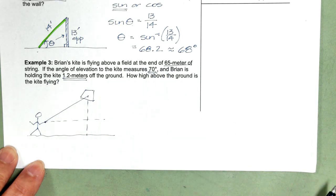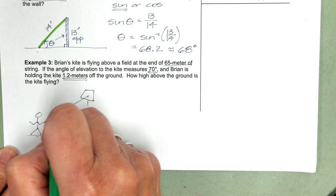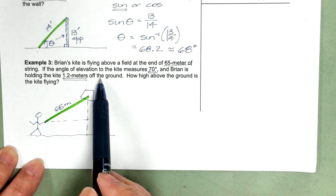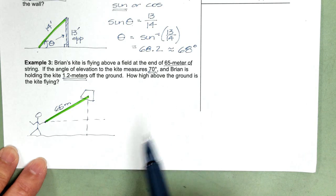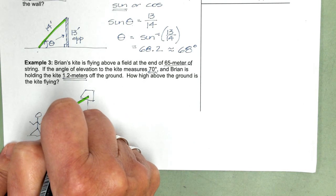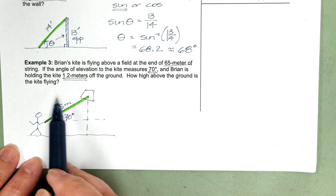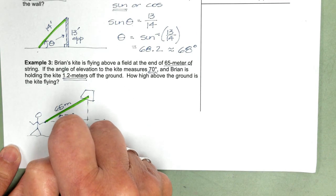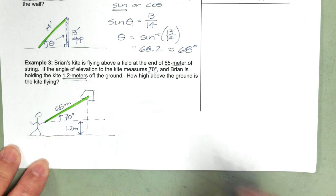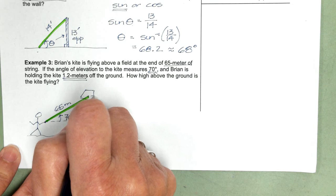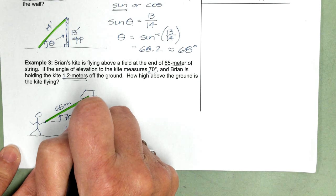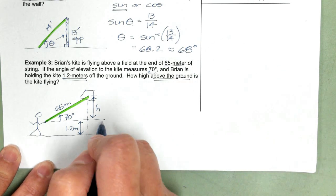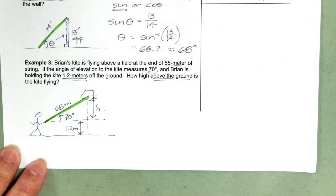So now we're going to fill in our information. The kite is at the end of a 65-meter length of string. Here is the string, which happens to be our hypotenuse. It is 65 meters. The angle of elevation to the kite measures 70 degrees. So this is 70 degrees. And Brian is holding the kite 1.2 meters off the ground. So from here to here is 1.2 meters. Now we're going to use trig to find this value here. And then to find out how high above the ground, we're going to need to add this to the 1.2 meters.